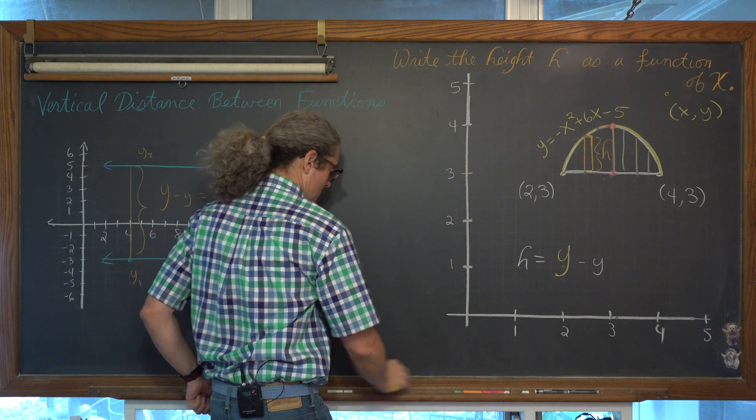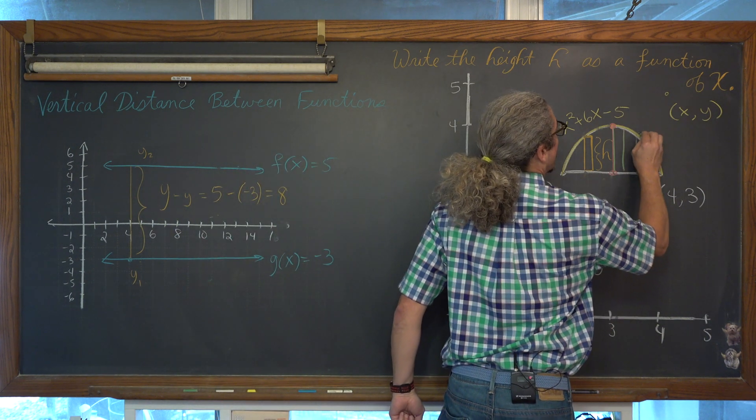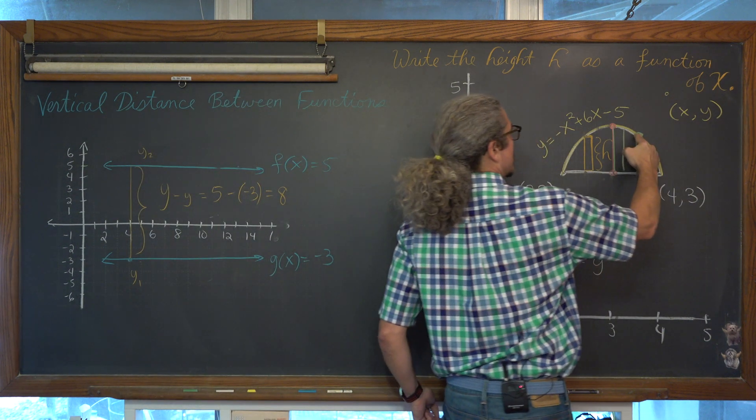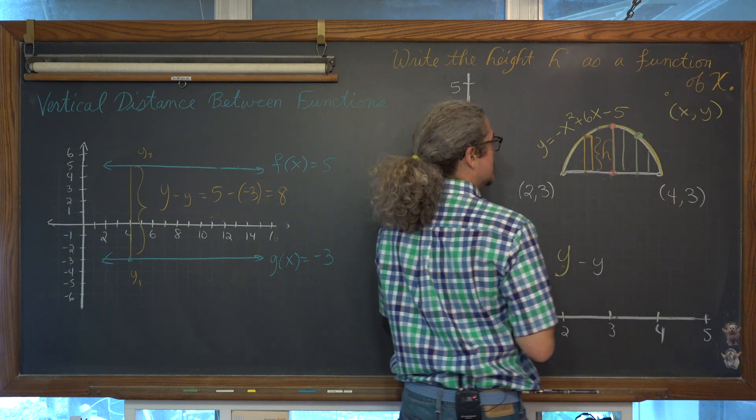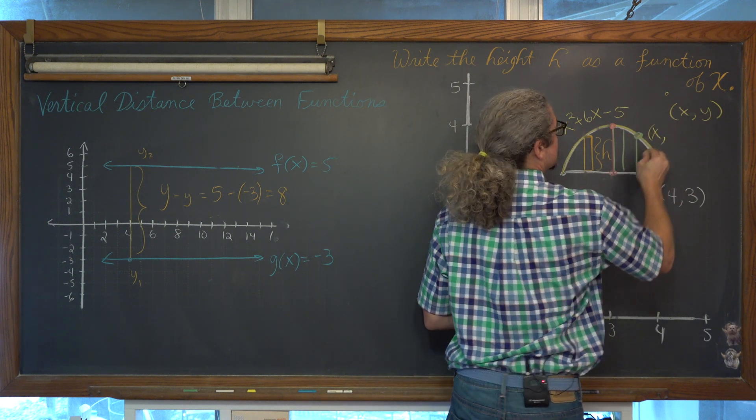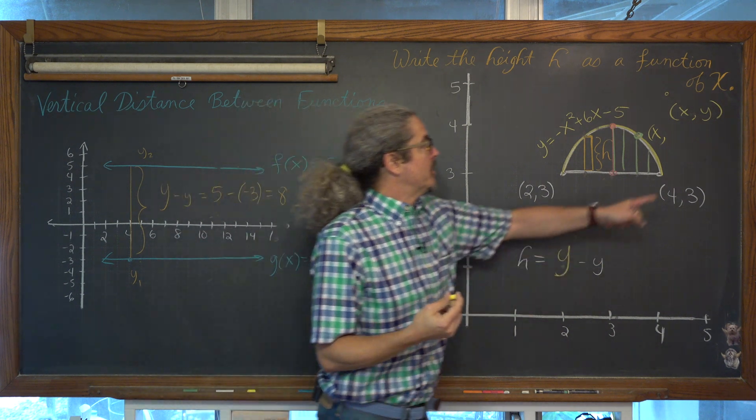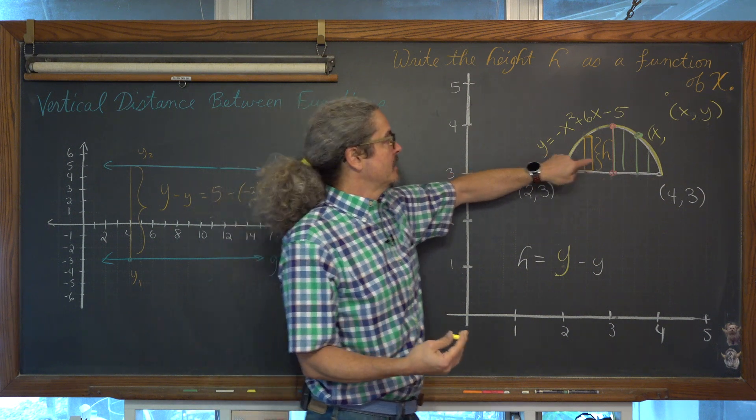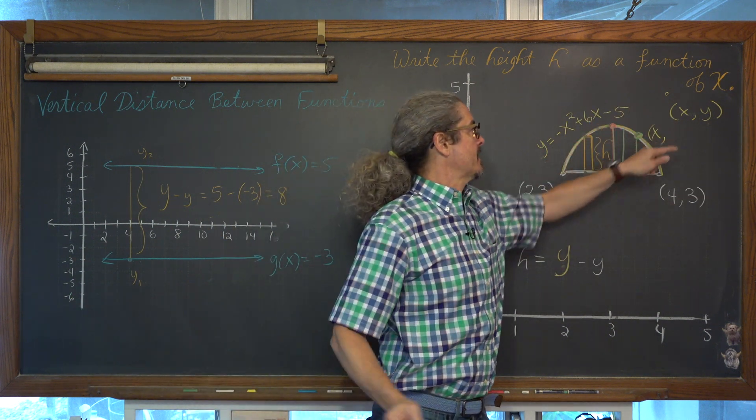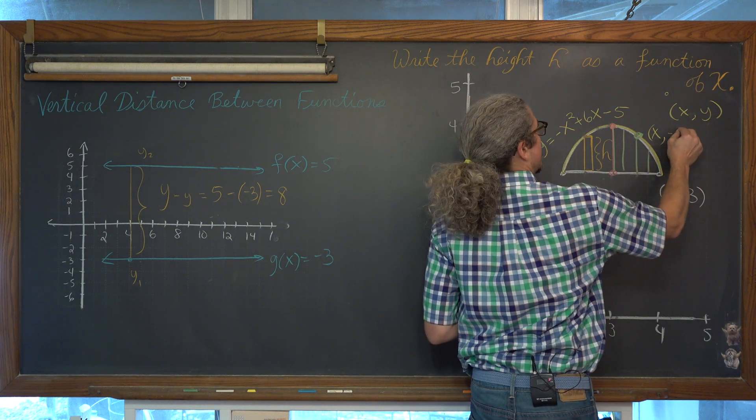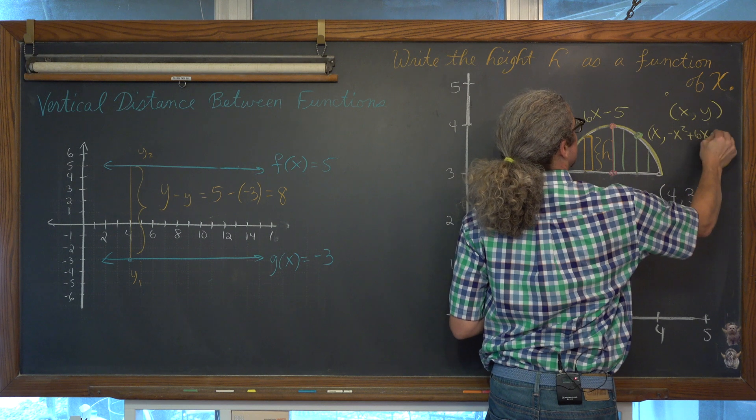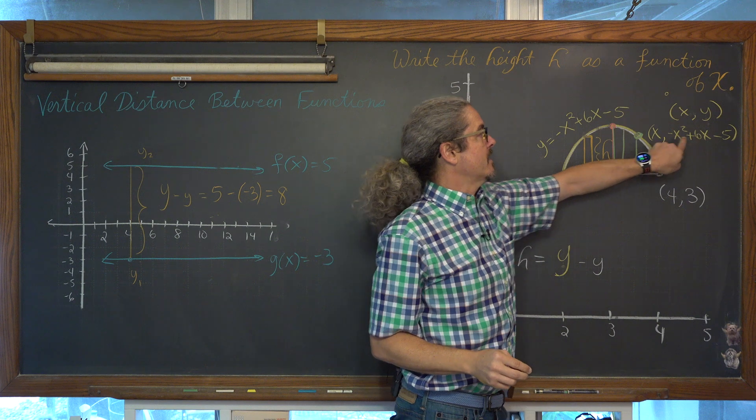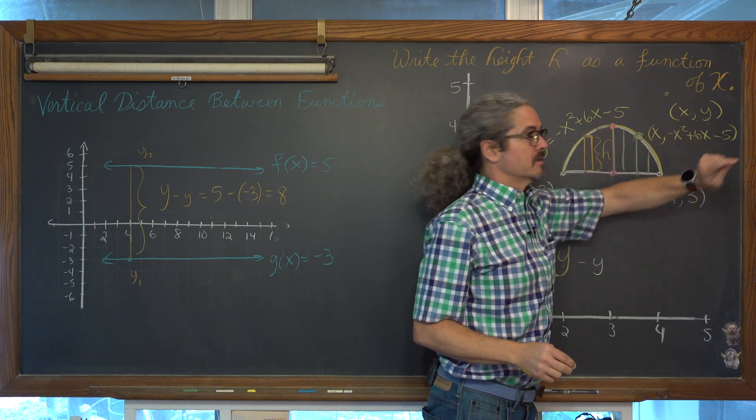We want our coordinate to be on the parabola, which means that's not just a generic coordinate of x and y. We get to choose the x, the independent variable, but the y coordinate, the dependent variable, the dependent value is coming from the parabola. If we just say x, y, that's just a point in space, but if I say x comma and then for y replace it with negative x squared plus 6x minus 5, now that is a specific y value that is actually on the parabola. That's what that means.